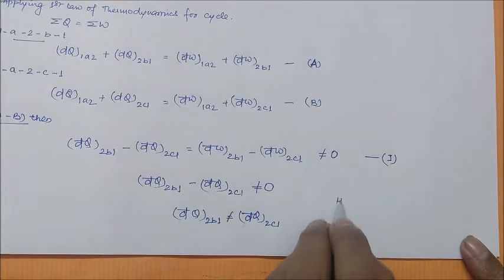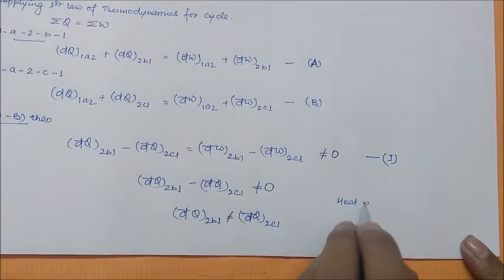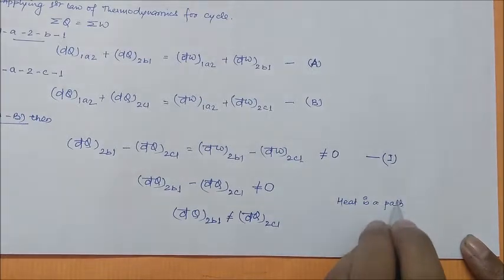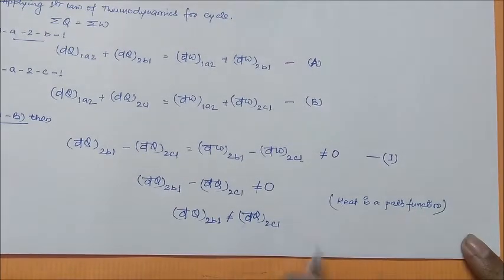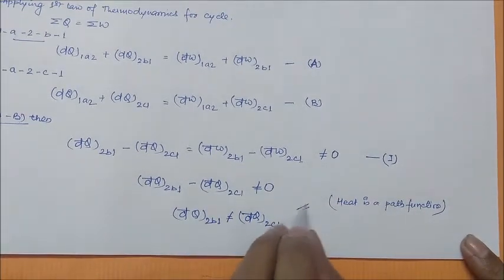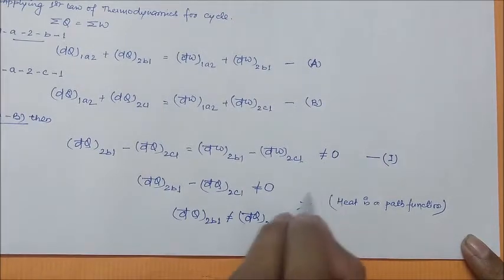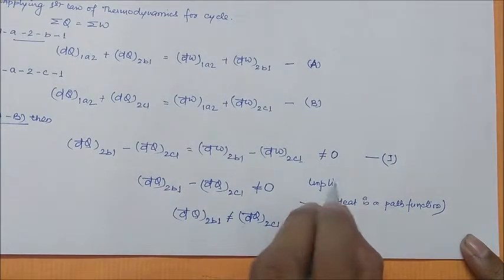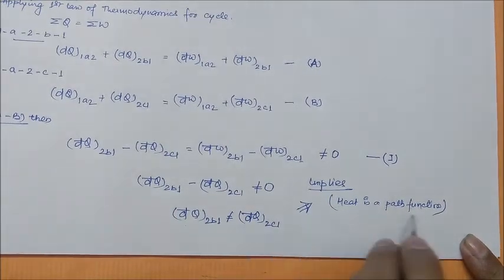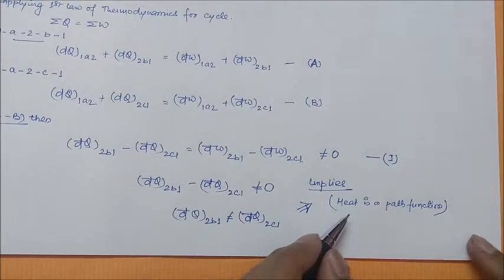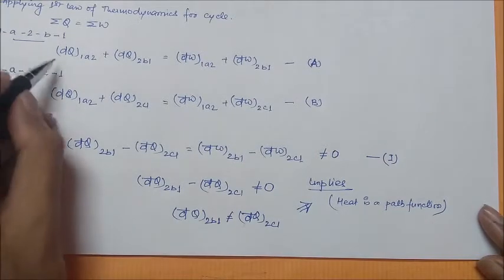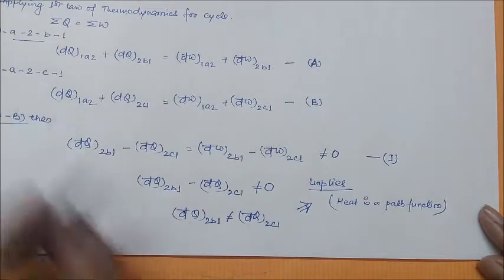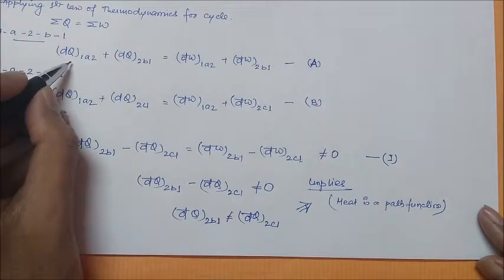For the same endpoints — from state 2 to state 1 — the endpoints are the same but the paths are different, and we get different heat transfers. This means heat is a path function and is an inexact differential, which is why we write δQ (delta-cut Q) instead of dQ.